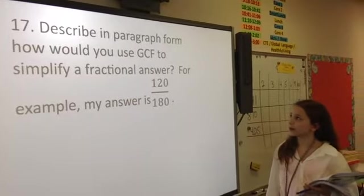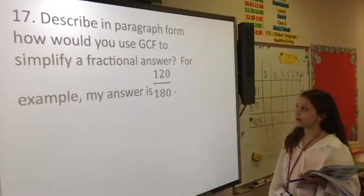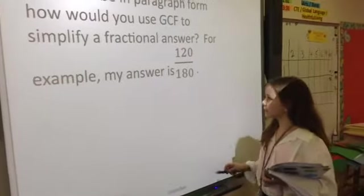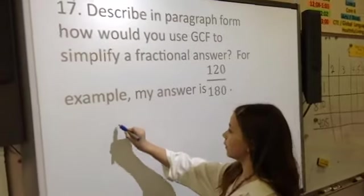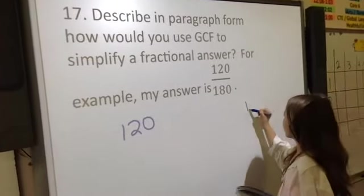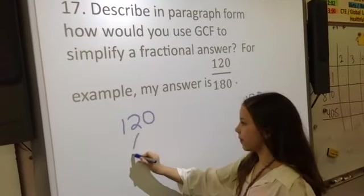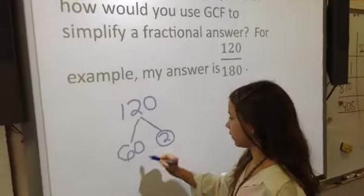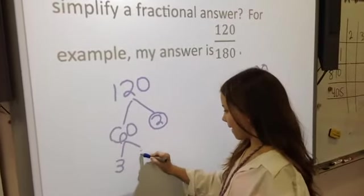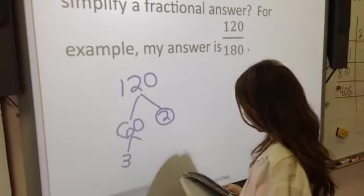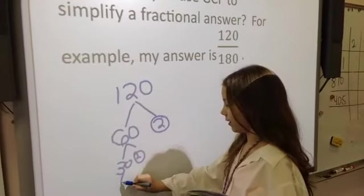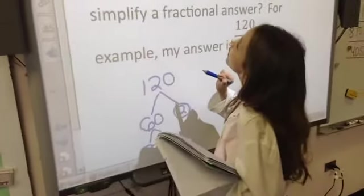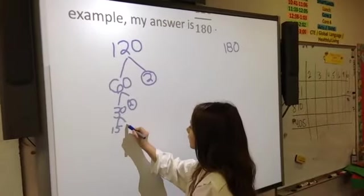Okay. So this problem is described in paragraph form how you use GCF to simplify a fractional answer. For example, my answer is 120 over 180. So first what you'll do is you'll use GCF and you'll do 120 and 180. So for 120, I like to split it in half. So I like to do 60 and 2. I circle to 30 and 2.